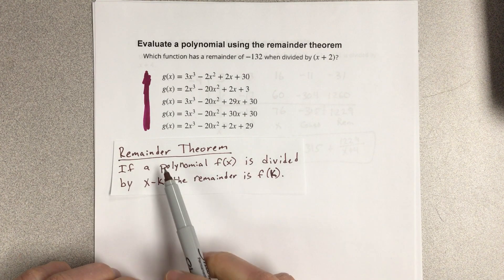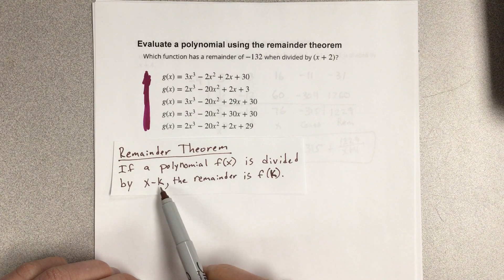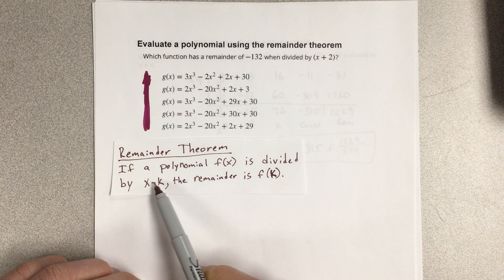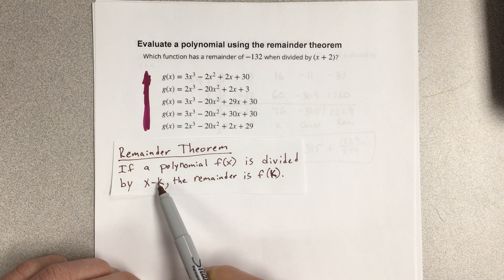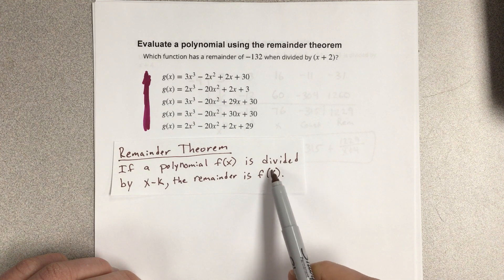Well, the remainder theorem states that if a polynomial f of x is divided by x minus k, the remainder is f of k. So if it's divided by some factor, with the zero being k, then the remainder is f of k, or f of that zero.